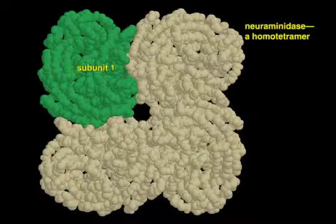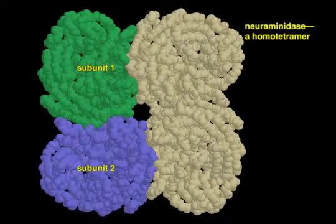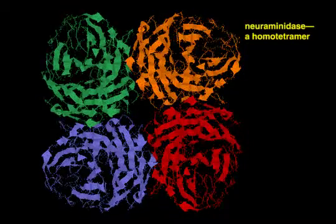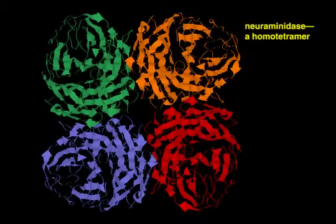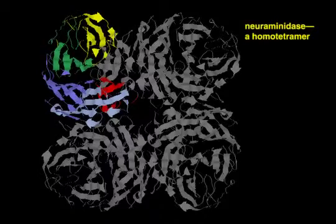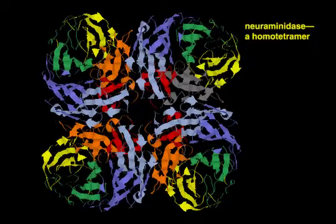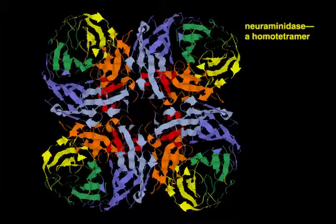The enzyme neuraminidase is composed of four identical subunits arranged in a square. Each pair of two subunits is held together in head-to-tail fashion by repeated use of the same binding interaction. This becomes clear when the polypeptide chains are colored in a rainbow pattern so that the same regions of each subunit have the same colors. All subunits adhere to each other through contacts between the orange and light blue regions.